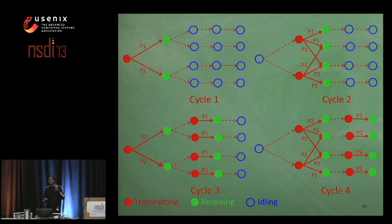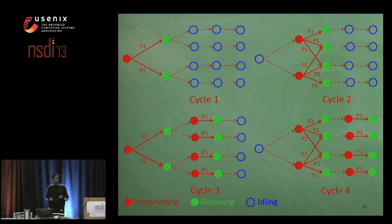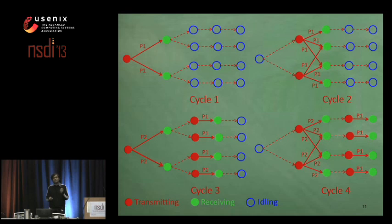In other words, we create multiple parallel packet pipelines covering all nodes in the network, thus maximizing throughput at every node in the network.